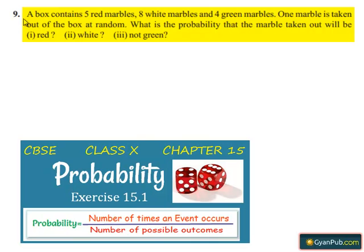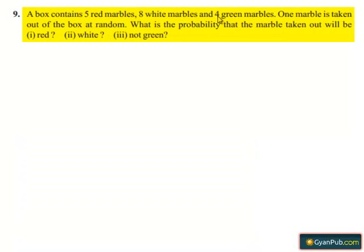Coming to question number nine. A box contains five red marbles, eight white marbles and four green marbles. One marble is taken out of the box at random. What is the probability that the marble taken out will be: first, red; second, white; and third, not green? Moving on to the solution.